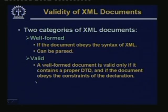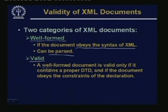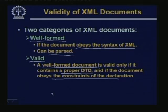XML documents can be categorized as well-formed if they obey all the syntax of XML and can be parsed. There is another level called valid — a valid document is well-formed, but it also contains a proper DTD and the document follows all the constraints of the DTD. So validity includes some semantic constraints in addition to just syntax, and then we call it a valid document.